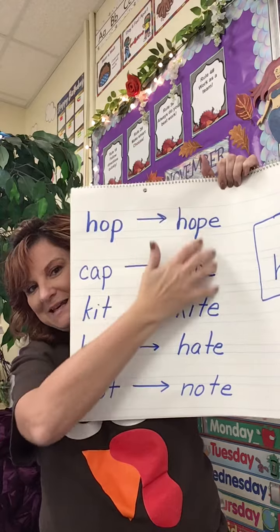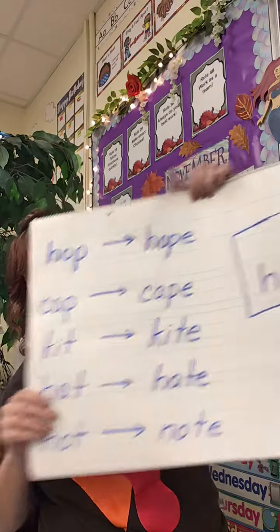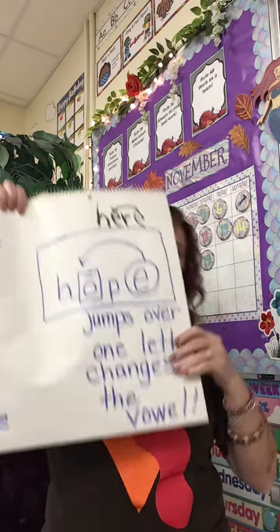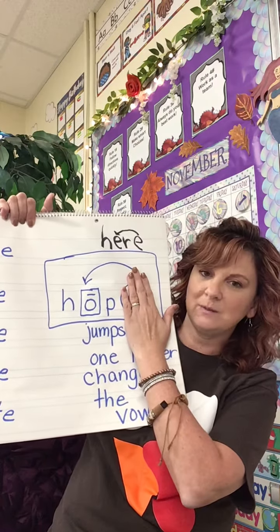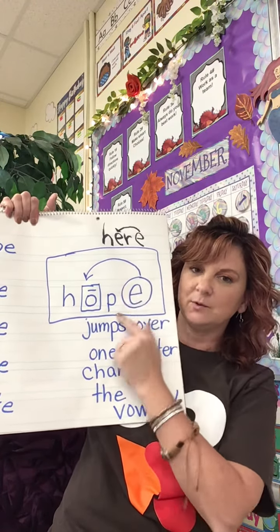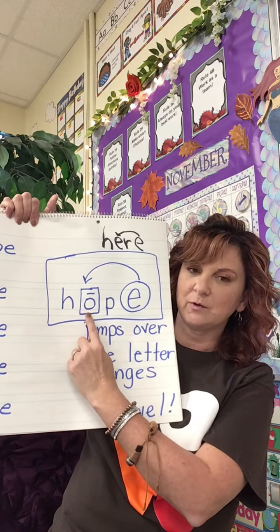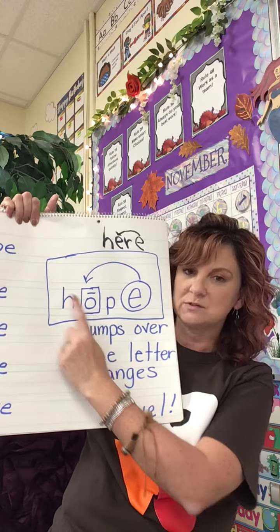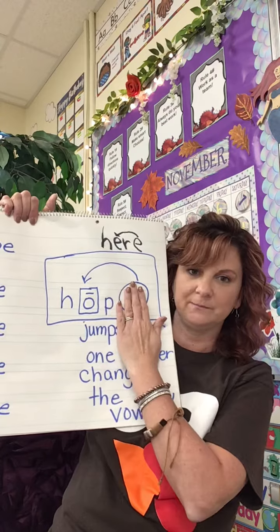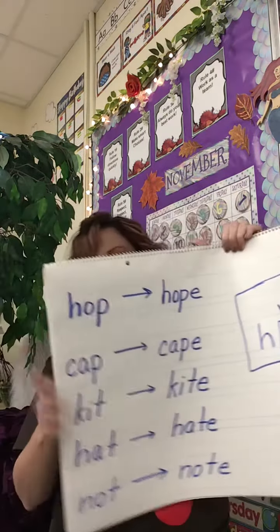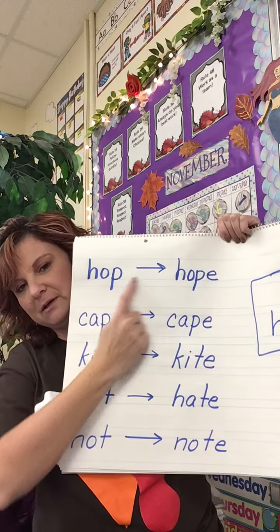So when that sneaky E comes along, it can hop over one letter and change the vowel. So if you have the word hop — H-O-P, hop — the O makes that short 'ah' sound, right? But when sneaky E comes along, he hops over the P and changes the O from 'ah' to the long O sound. So now we have H-O-P-E, hope, and we don't hear the E. It jumps over one consonant. So it turns hop into hope.